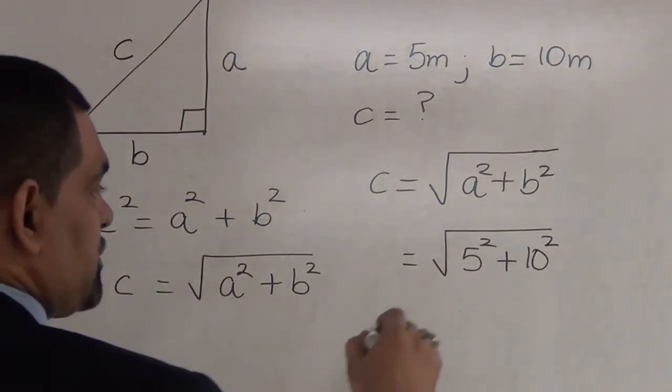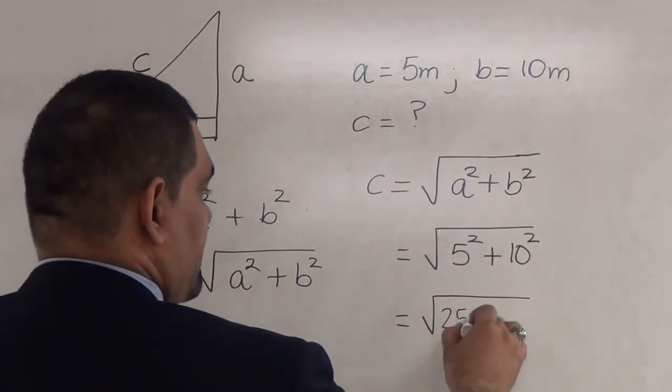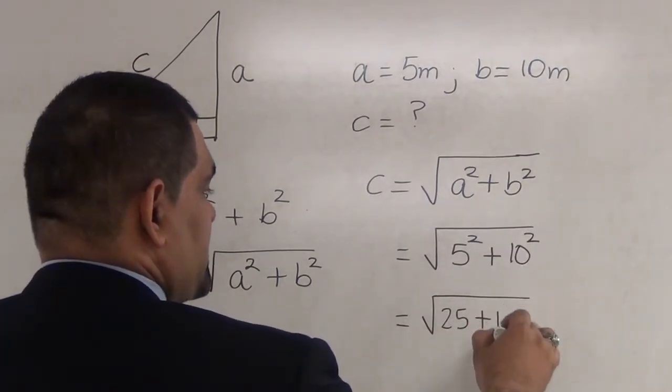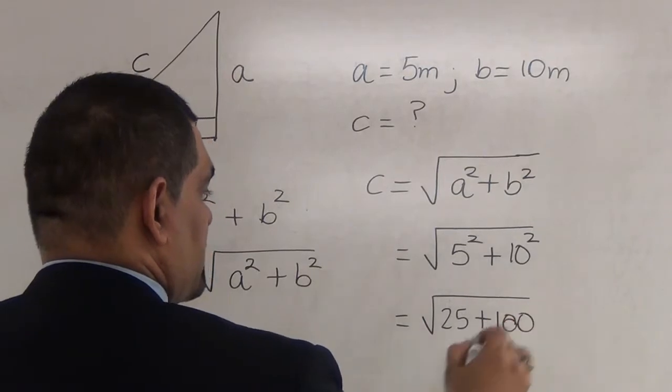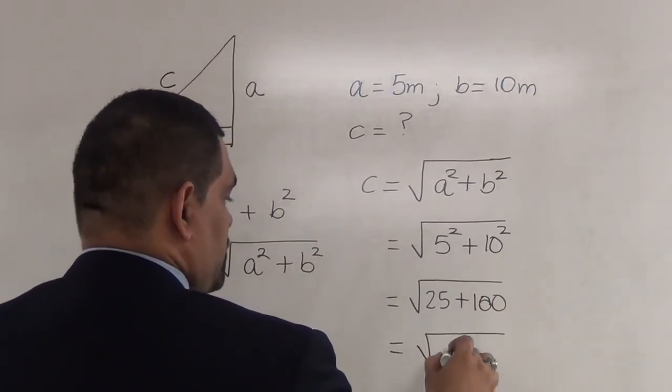So, now we continue resolving the problem. We have now the square root of 5 squared is 25, and 10 squared is 100. We now go ahead and add 25 and 100, give us 125.